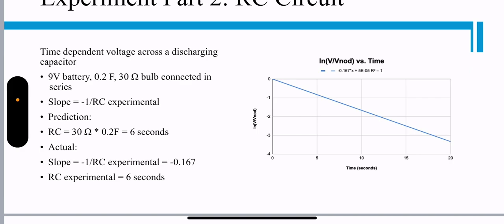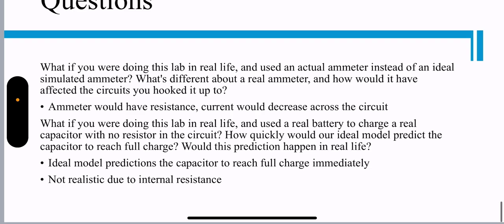See experimental. The prediction is RC equals 30 ohms times 0.2 farads, which is 6 seconds. Actual is also 6 seconds due to our calculations.